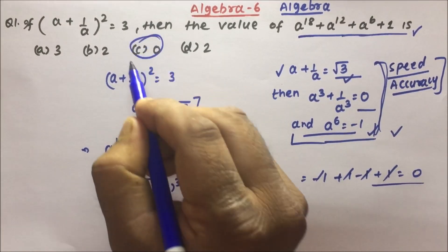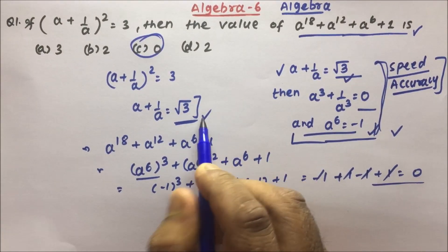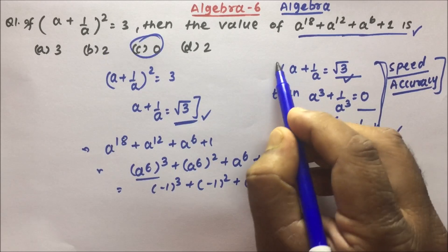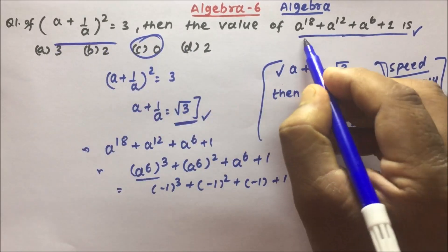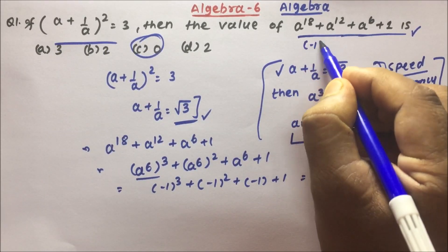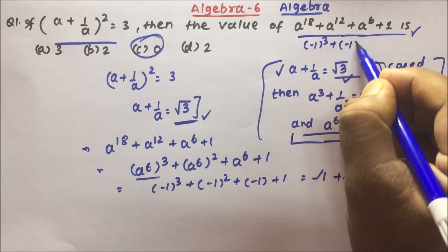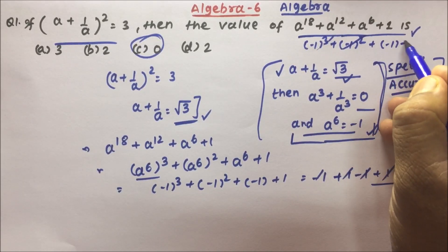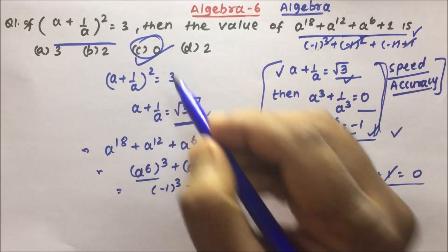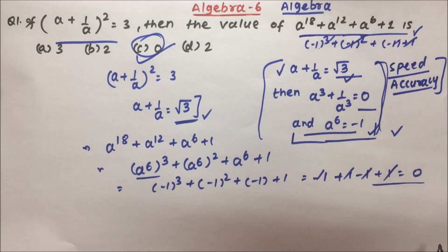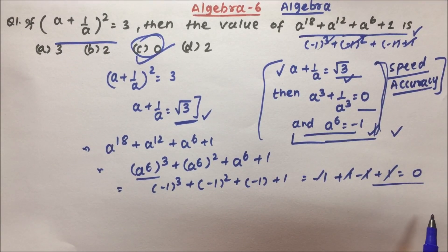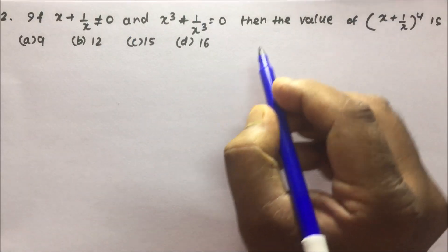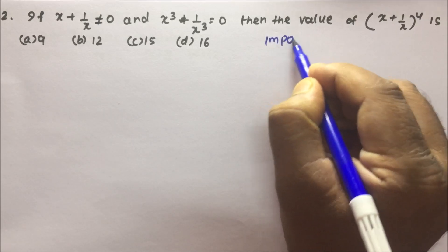So you see how straightforward this is once you know the concept. Directly substituting: (-1)³ = -1, (-1)² = 1, then -1 + 1 = 0, so all together equals 0. Option C is the correct answer. You do not have to spend a lot of time solving this kind of problem.